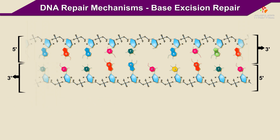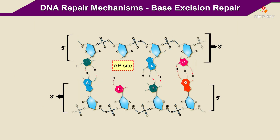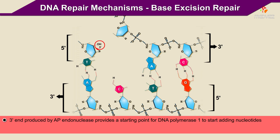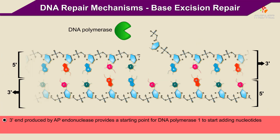The result is an intact phosphodiester backbone missing a base. The site is called an AP site. In this case, it is missing a purine and is therefore an apurinic site. If it were missing a pyrimidine, it would be an apyrimidinic site. The next step in Base Excision Repair involves AP endonucleases that specifically cleave the phosphodiester backbone at AP sites. The 3' end produced by the AP endonuclease provides a starting point for DNA polymerase I to start adding nucleotides.